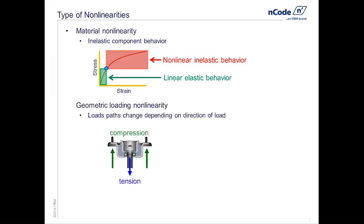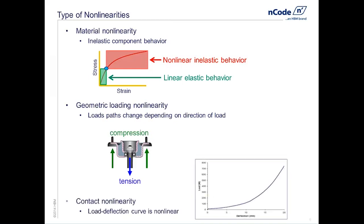Secondly, we'll look at geometric loading nonlinearity — how do we address cases where our stress states vary dramatically depending on the direction the load is being applied? We'll use the example of a strut where we have different load paths depending on whether it's in compression or tension. Finally, we'll look at contact nonlinearity — nonlinear bushings that cause a nonlinear relationship between applied load and deflection, where simply scaling a stress state due to a unit load won't work.